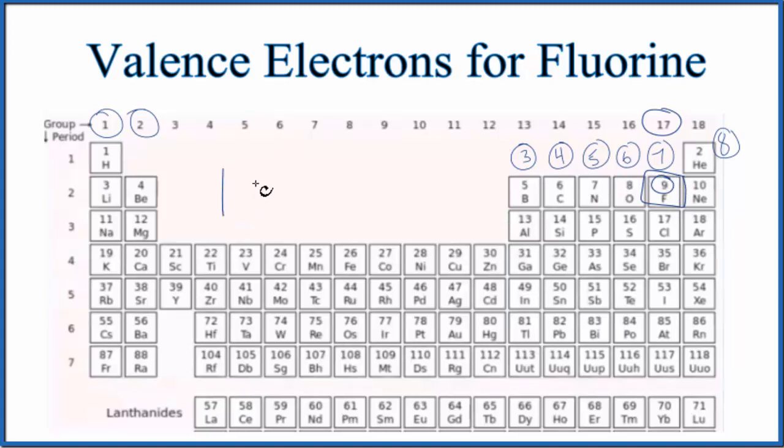So we write the configuration 1s2. That energy level is full. 2s2. And then we have 2p5. So 2 plus 2 is 4 plus 5. That gives us the 9.